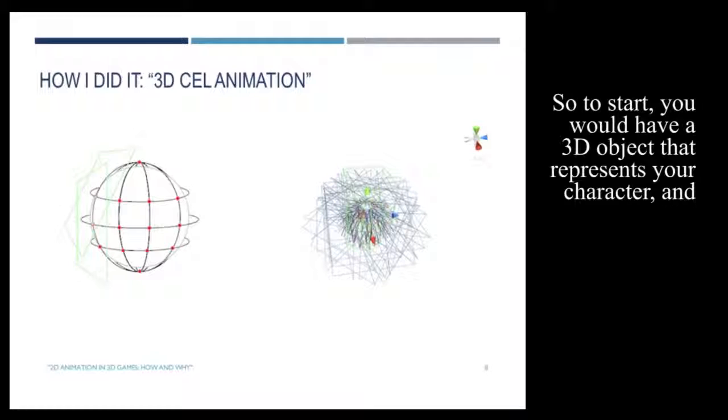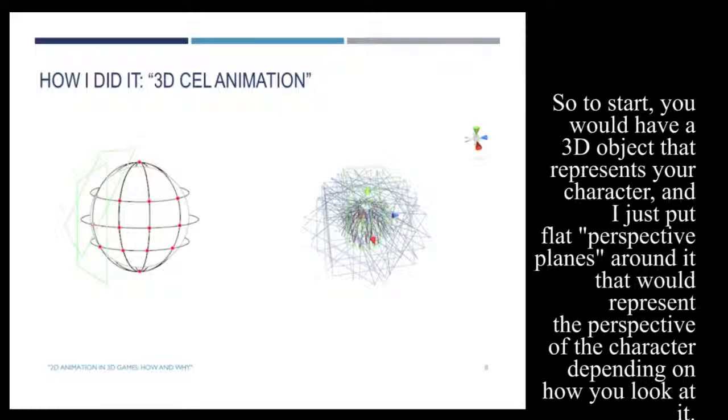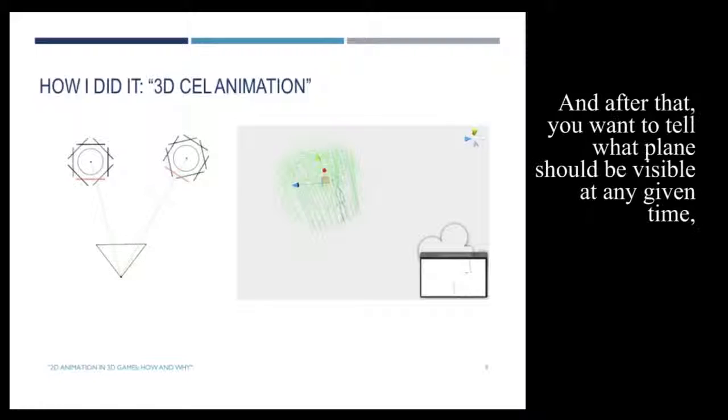So at the start, you would have a 3D object that represents your character, and I just put flat and perspective planes around it. That would represent that perspective of the character, depending on how you're looking at it. I think for my games, I use about 24 perspective planes around the character.